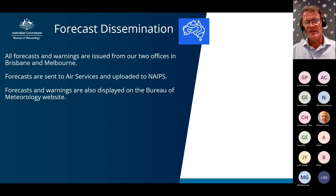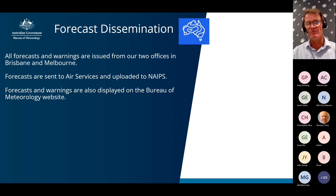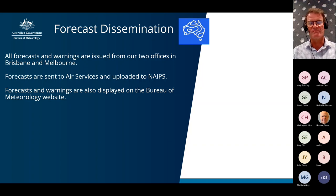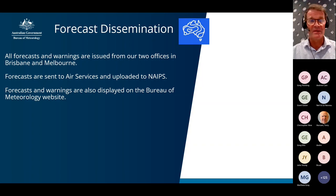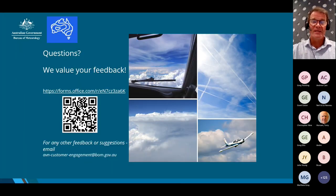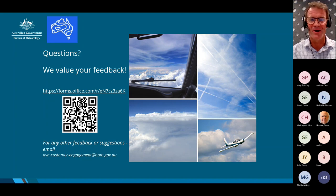All our forecasts and warnings are sent from our offices in Brisbane and Melbourne to Airservices and uploaded to NAIPS — the required place to get all your forecasts from. All our forecasts are also displayed on the Bureau of Meteorology website, where you can also see all our METARs and SPECIs and all the information from those weather stations, both in NAIPS and on the Bureau of Meteorology website.